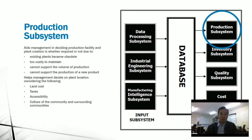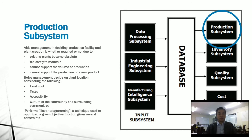When choosing a plant location, you need to consider the land cost, accessibility, and the culture of the community and surrounding communities. The production subsystem also performs linear programming, which is a technique used to optimize a given objective function given several constraints.